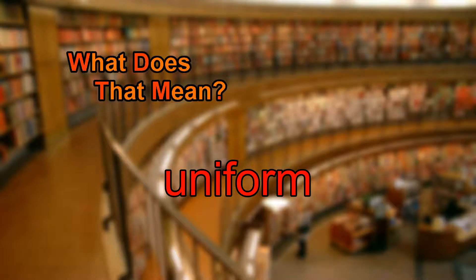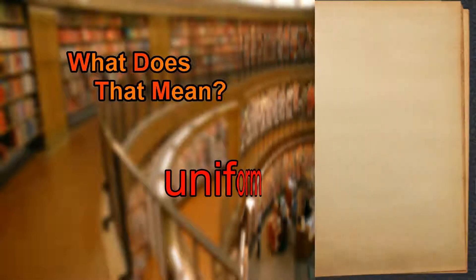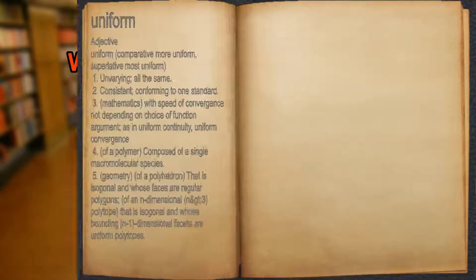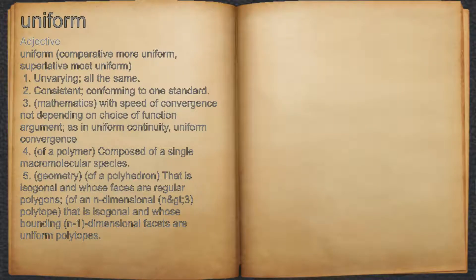What does uniform mean? Uniform. Adjective. 1. Unvarying, all the same. 2. Consistent, conforming to one standard.